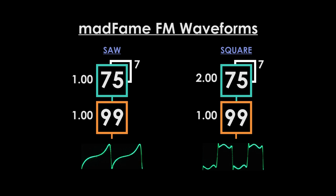Copy the formulas above and save each of these waveforms in their own patch memory. You can name them MF Saw and MF Square.